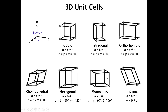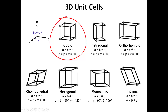The most symmetric kind of three-dimensional unit cell is the cube, and that leads to a lattice called cubic. Unit cell vectors are all equal to each other, and they're all at right angles to each other. You could imagine this as starting from a square 2D lattice and then adding a third perpendicular vector.